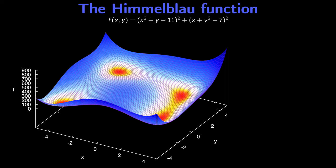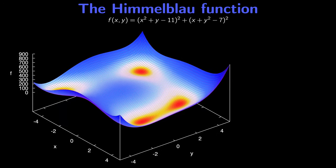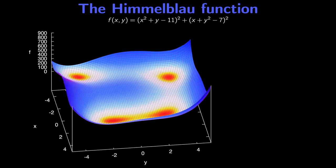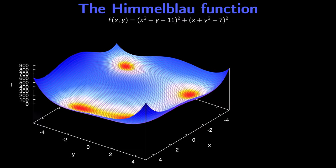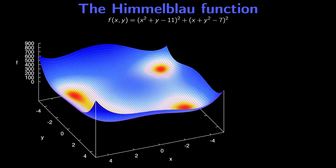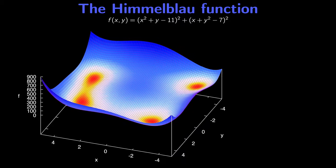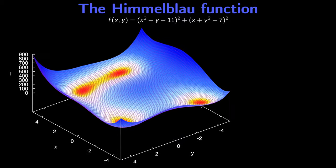We'll now demonstrate the steepest descent method. To do so, we'll make use of the Himmelblau function, which is a common benchmark function used for testing optimization approaches. The Himmelblau function is a polynomial of two variables x and y and features terms up to the fourth power. Looking at a three-dimensional plot of the Himmelblau function, if we rotate around this plot we see that there are four isolated local minima shown by the red patches, and in between these four local minima there's a single isolated local maximum.